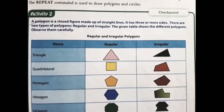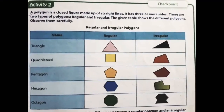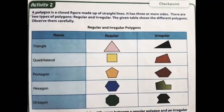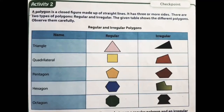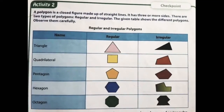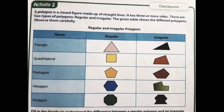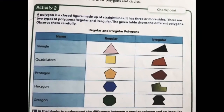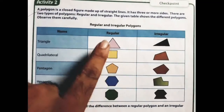The given table shows the different polygons — observe them carefully. You can see the polygons given in a table: the first one is triangle — regular triangle and irregular triangle; then quadrilateral — regular as well as irregular; pentagon — regular and irregular; hexagon — regular and irregular; and octagon — regular and irregular.